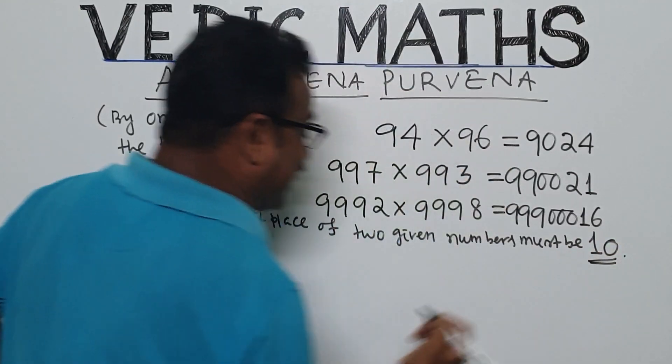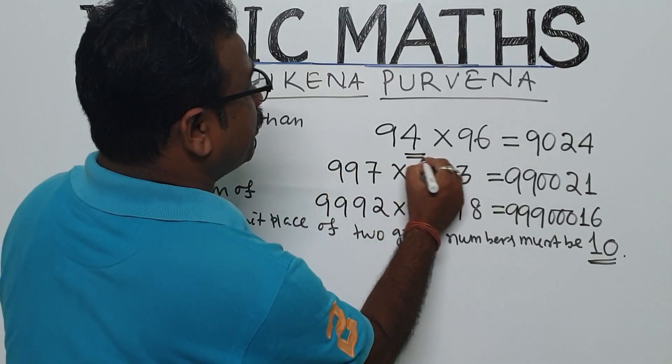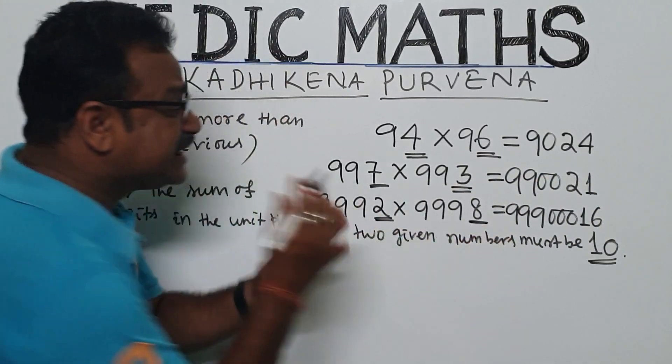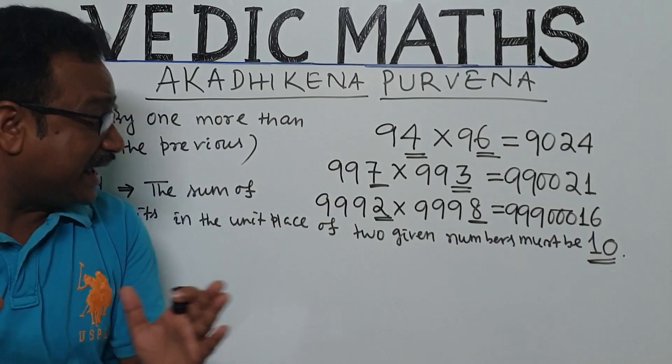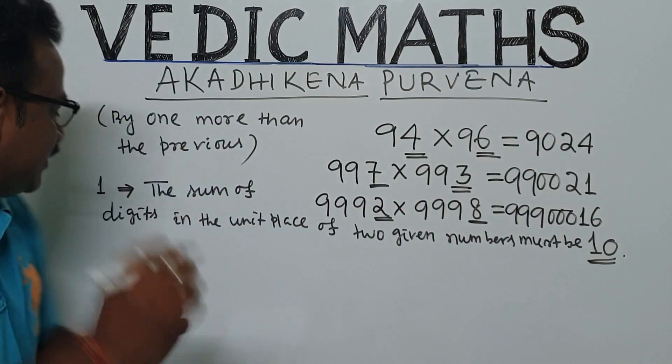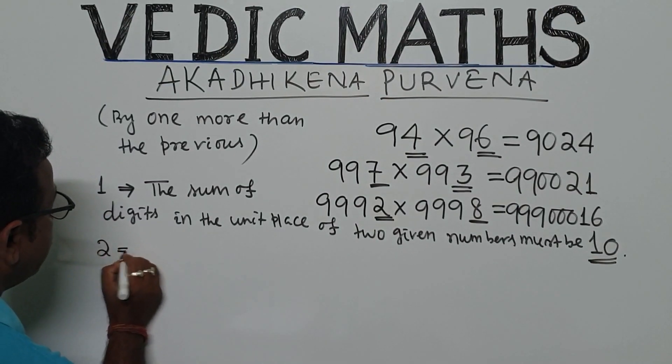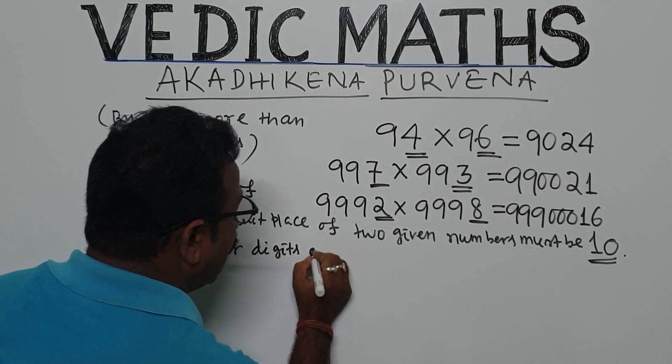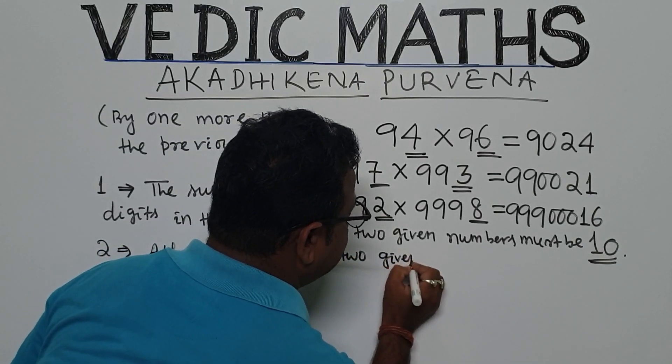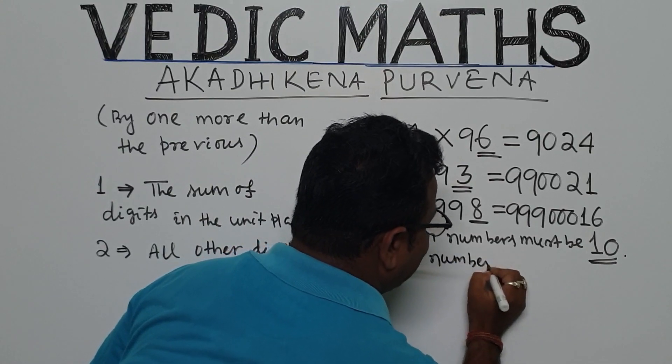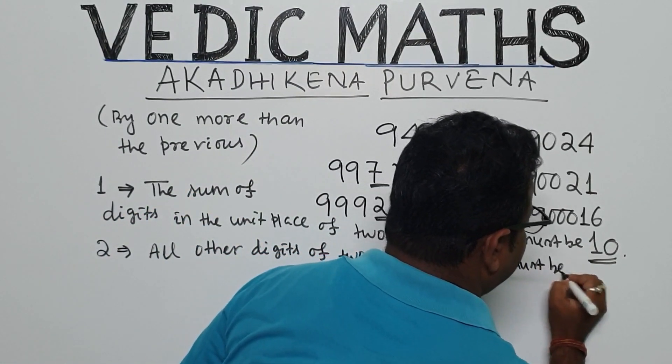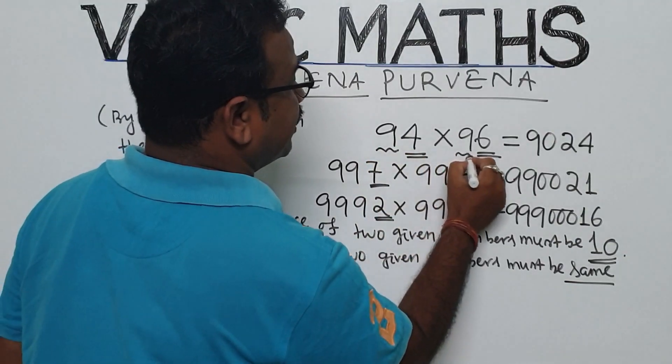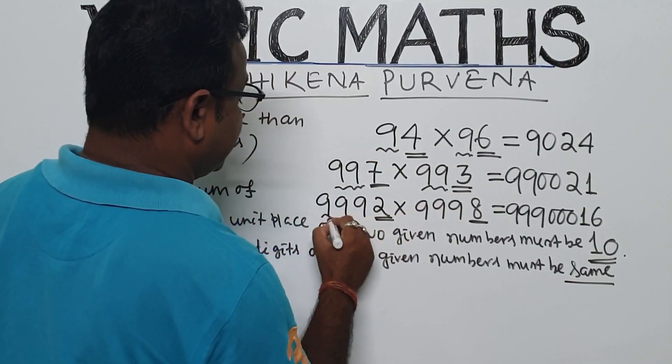the sum of digits in the unit place of two given numbers must be 10. So here see, four plus six is 10, seven plus three is 10, two plus eight is 10. So the sum of the digits in the unit place of two given numbers must be 10. Then number two, step two, all other digits of two given numbers must be same. See here, 9, 99, 99, 999, 999.